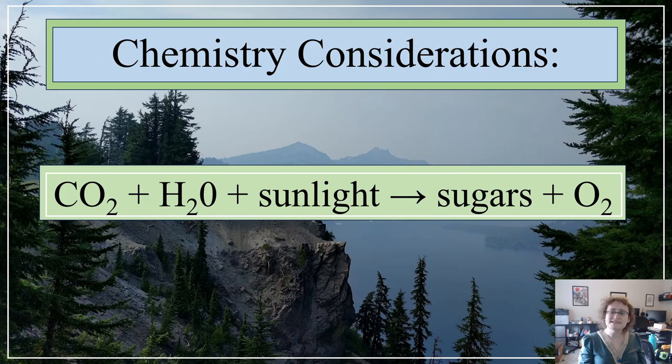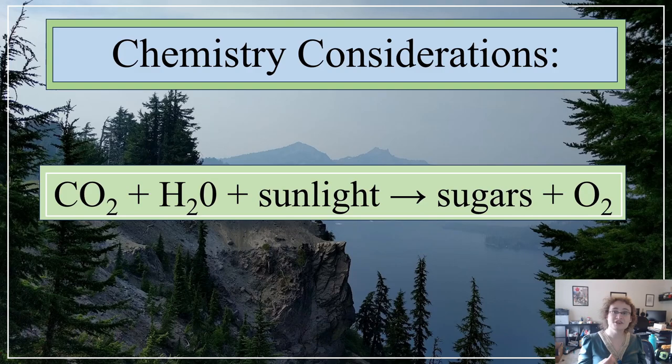Trees, like all photosynthetic plants, are built upon a fundamental chemical reaction. In photosynthesis, carbon dioxide and water are combined to form various simple sugars and oxygen. This represents an endothermic process requiring the input of energy, which is provided by solar photons absorbed in the chloroplasts of plant cells. The simple sugars produced — such as glucose, sucrose, galactose, and xylose — are then reordered and combined into the cellulose, hemicellulose, and lignin that form the bulk of the material structure of trees and lumber.